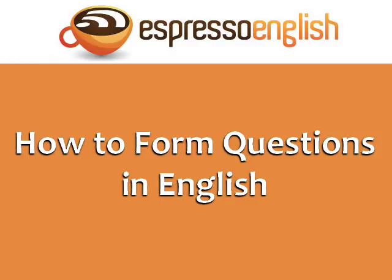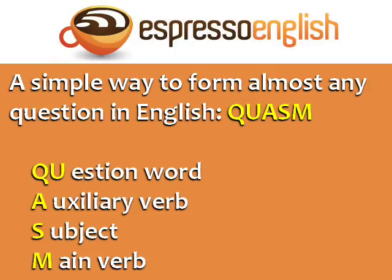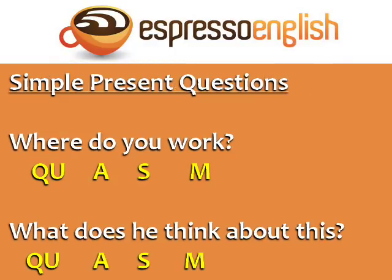How to form questions in English, from espressoenglish.net. Many students get confused with the word order in questions, but there's a simple way to form almost any question in English. Just follow this formula: question word, auxiliary verb, subject, main verb. This formula can be used for many tenses.